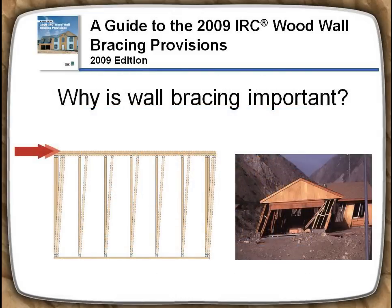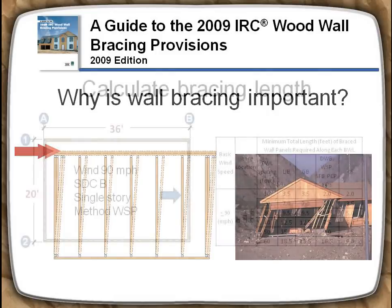Wall framing is designed to hold a roof and floors up under snow, rain, and the weight of the house. Wall bracing supports a house against pressures caused by wind and the movement of the structure from side to side during an earthquake. The figure shows how a framed wall racks sideways without sheathing on the frame. The photo shows racking of an incompletely sheathed house after an earthquake.